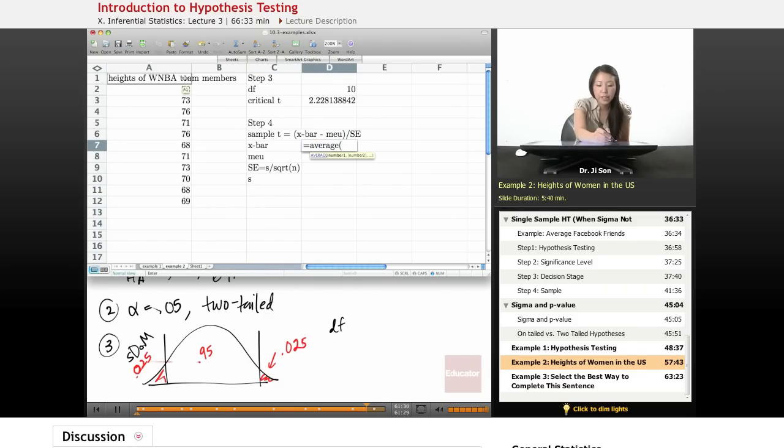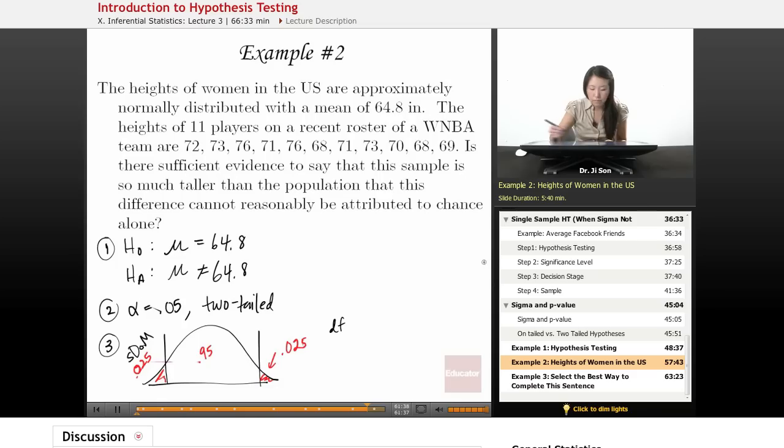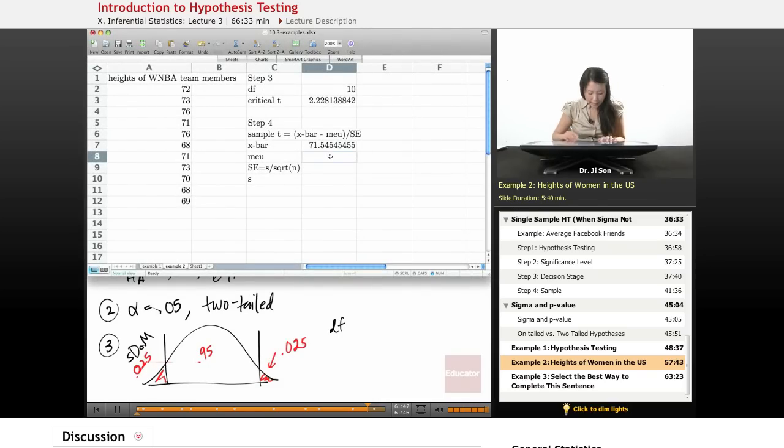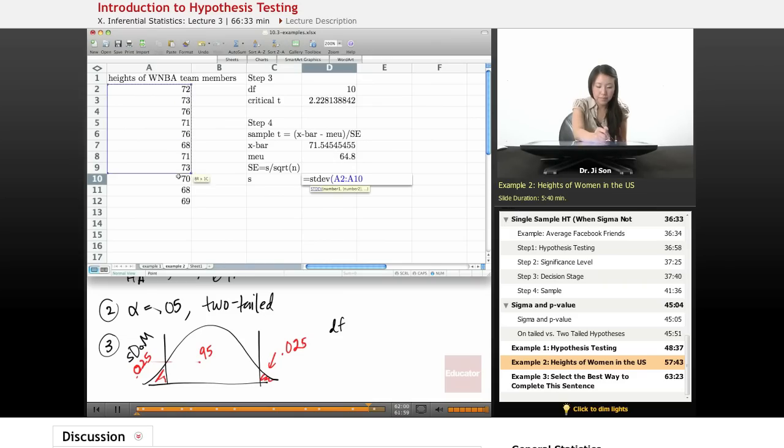So I need the average. I also need the mu, which I already know from the problem, 64.8. I need to get my Excel back. And I need to get my standard error, but before I do that, I need to get s, standard deviation. And then once I have standard deviation, I could take that and divide it by the square root of n, which is 11.